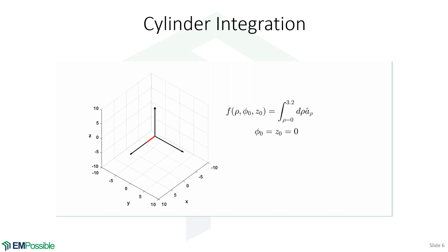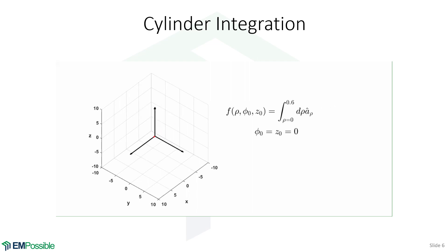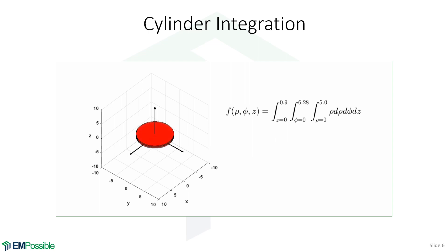We can do a similar thing and visualize a cylindrical type of integration. First, we integrate along an axis, then we integrate along phi, and then along Z, eventually integrating an entire cylinder. So here we're integrating along the radial axis, then phi, and then Z.